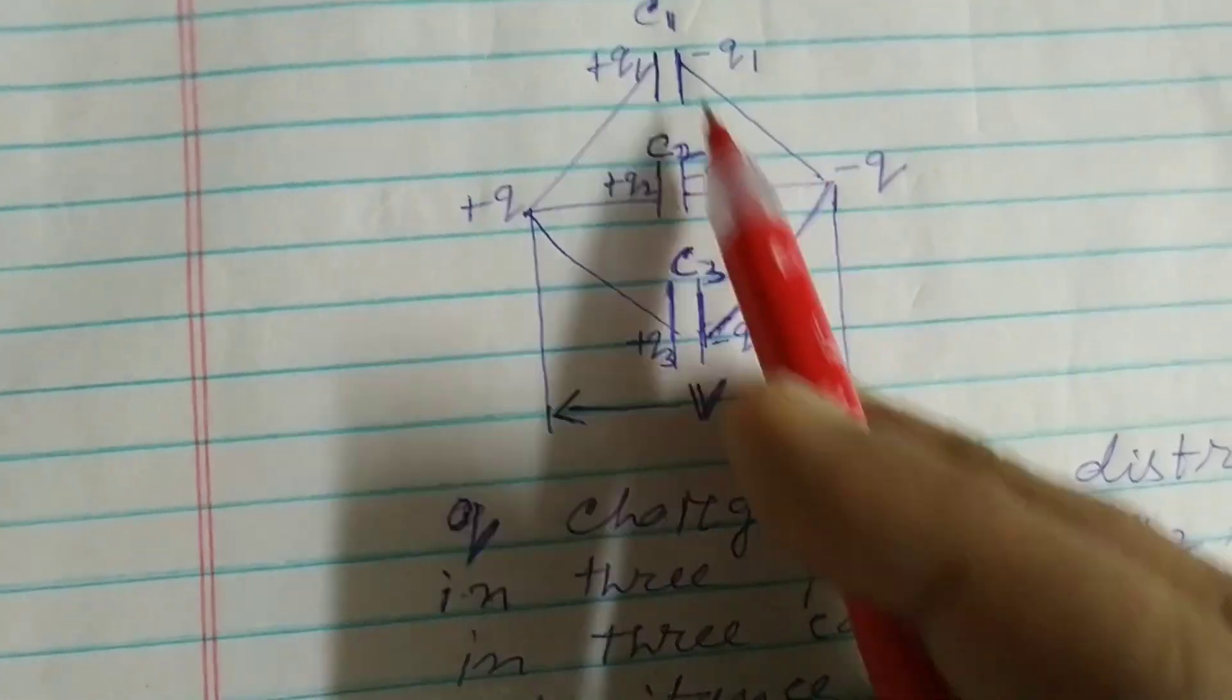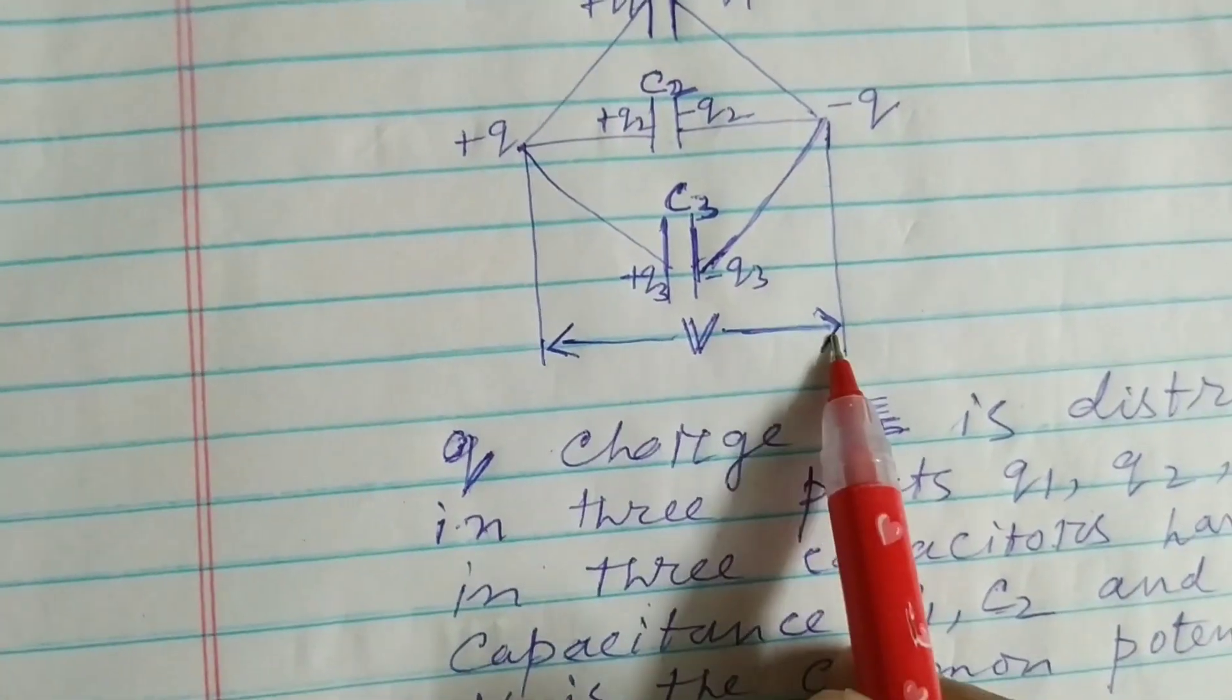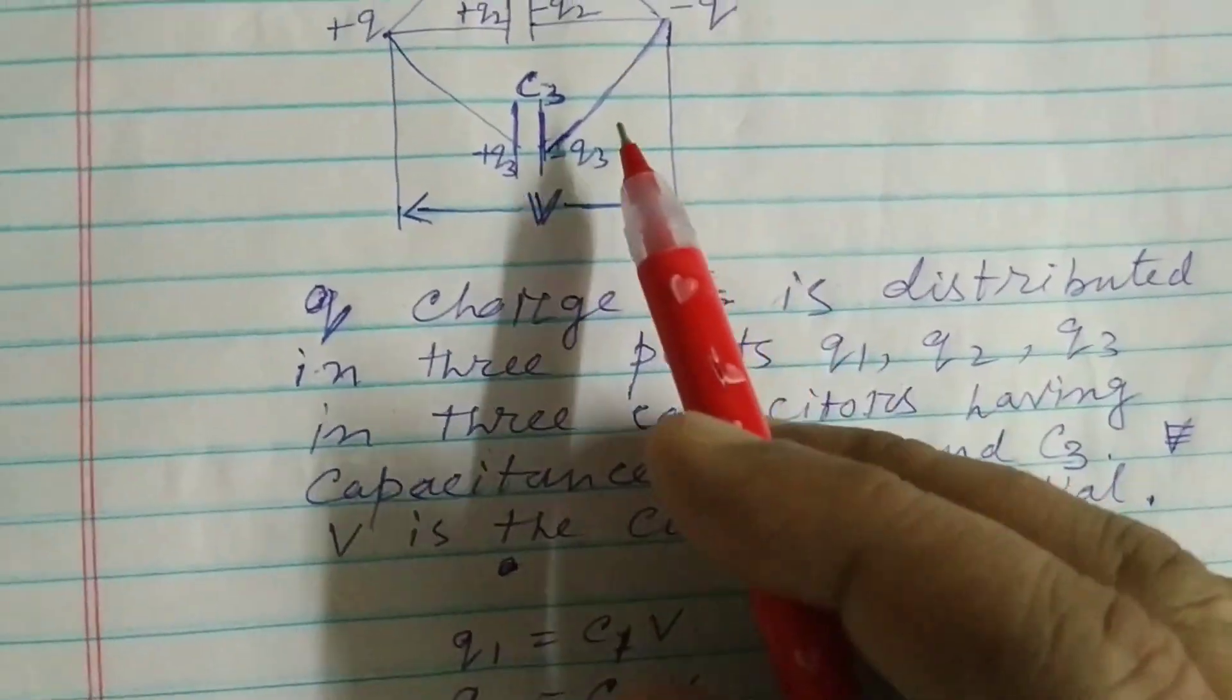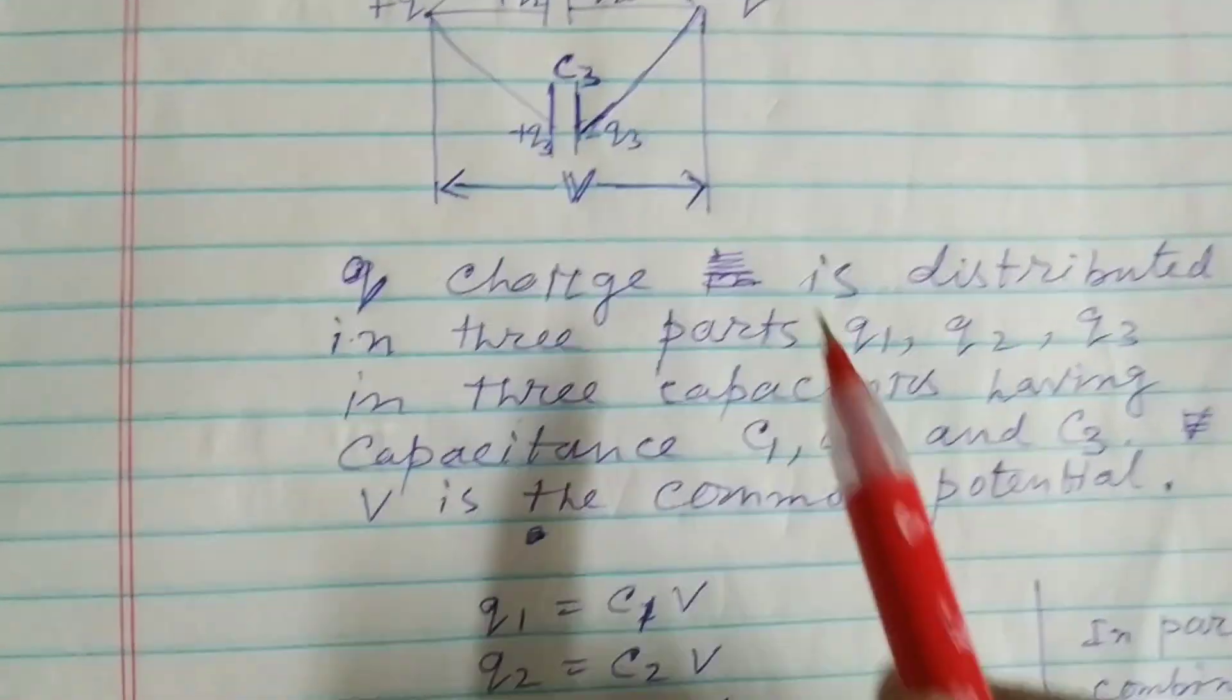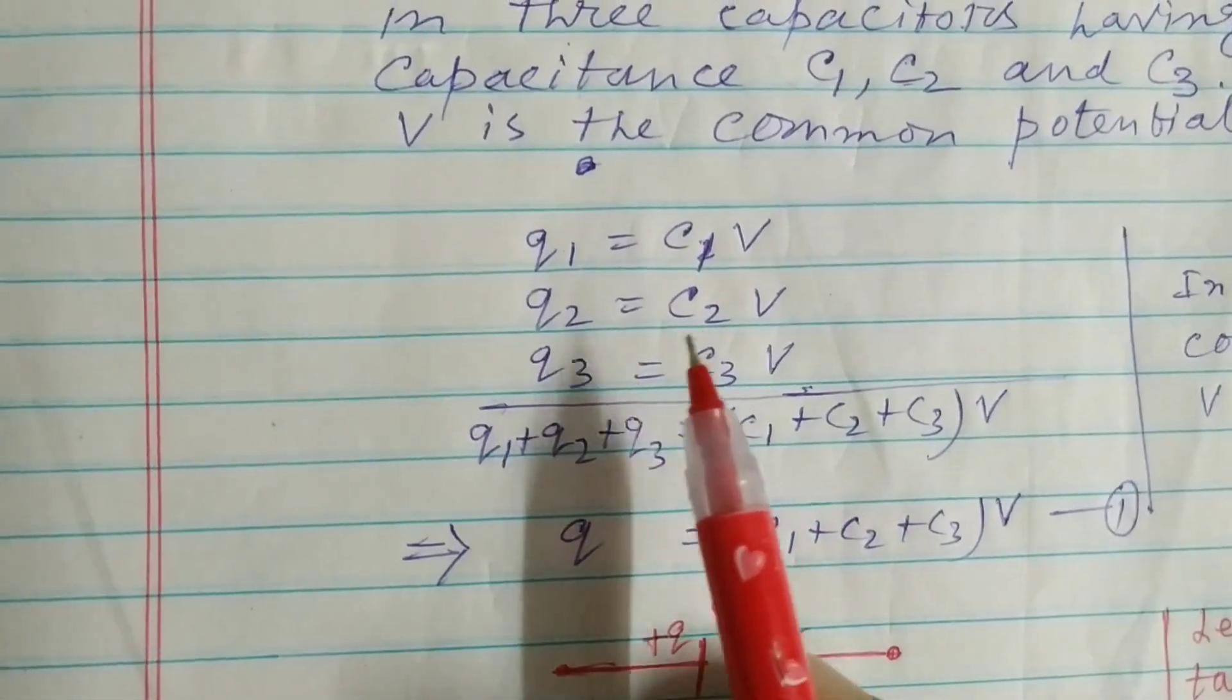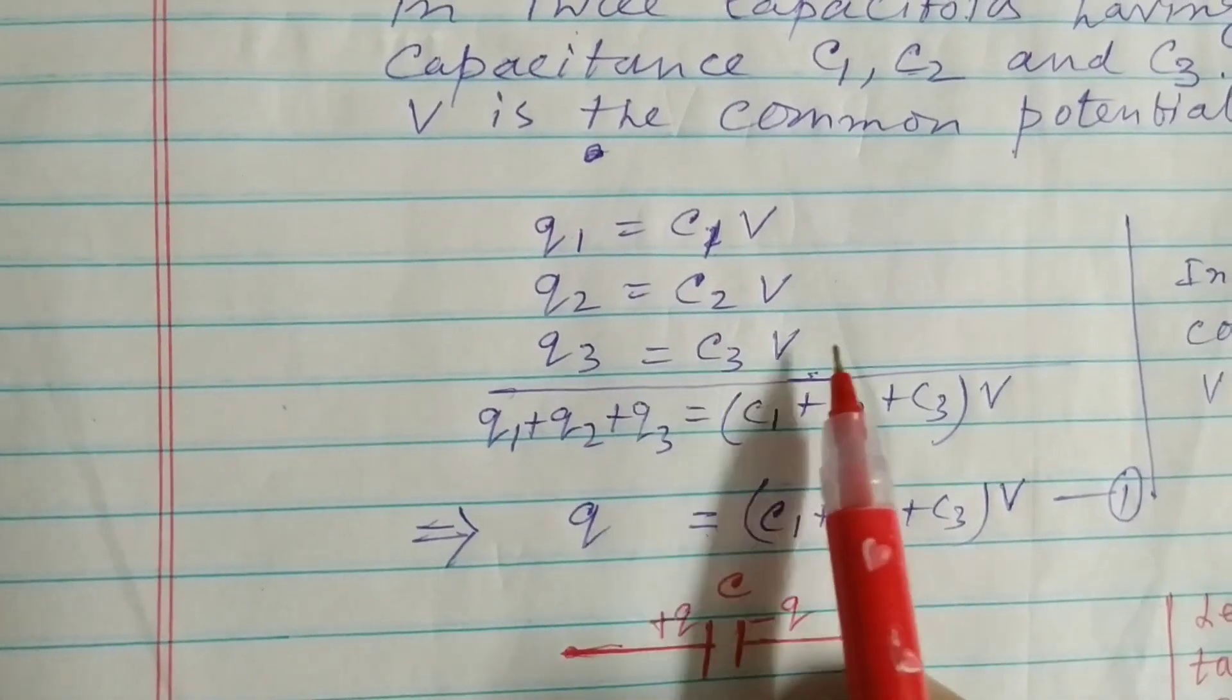So that the conservation of charge holds and here V is the potential. Remember in parallel combination, V should be constant or common. So Q1 equals C1 V, Q2 equals C2 V, and Q3 equals C3 V.